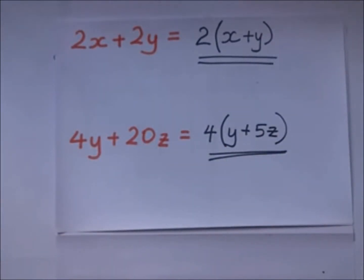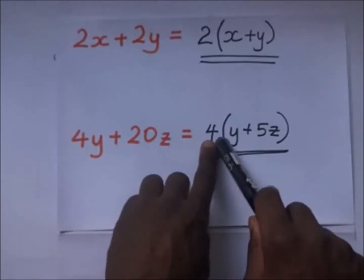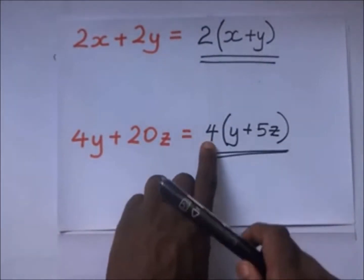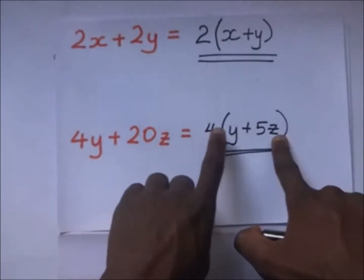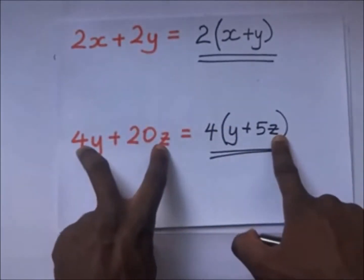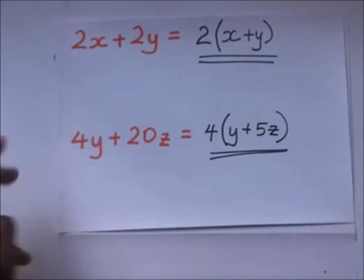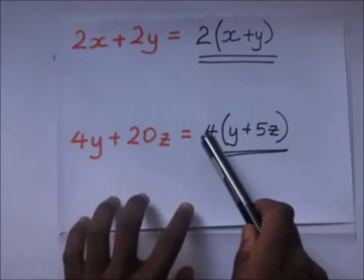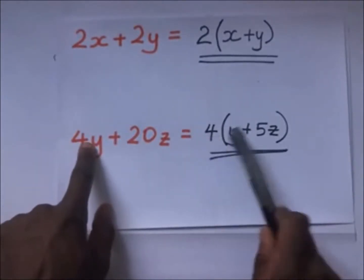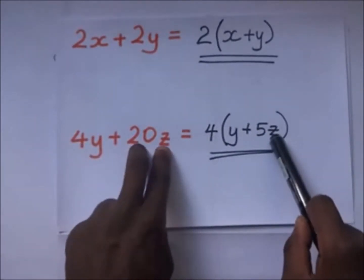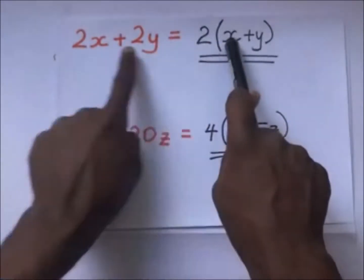The answer must be such that when you open these brackets you get back to the original expression. For example, here if I open the brackets: 4 times y gives me 4y, then 4 times 5z gives me 20z. Likewise, 2 times x gives me 2x and 2 times y gives me 2y.